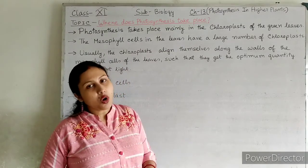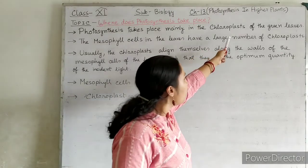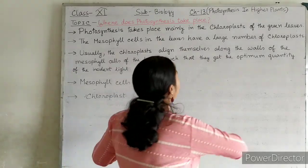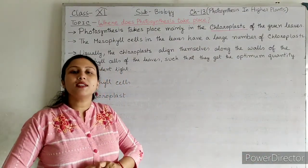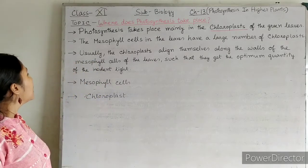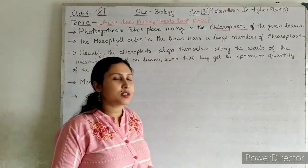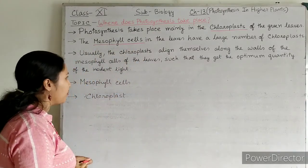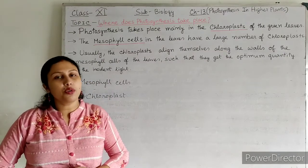We all know that photosynthesis takes place mainly in the chloroplasts of the green leaves. Chloroplasts are a type of plastid present in plant cells. The mesophyll cells in the leaves have a large number of chloroplasts.